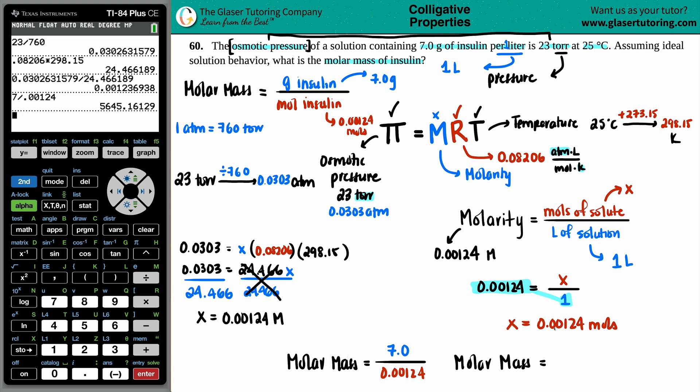Now, technically, we only have two sig figs here. We started off with two. So I can only give it back in two. So 5.6 times 10 to the 1, 2, 3. And grams and moles are two totally different units. They do not cancel out. So you have to keep those units in the units for molar mass. And that is the answer.